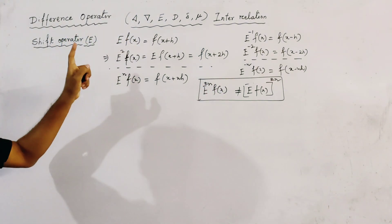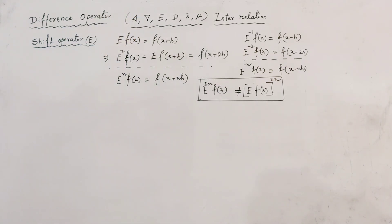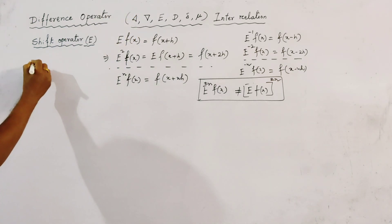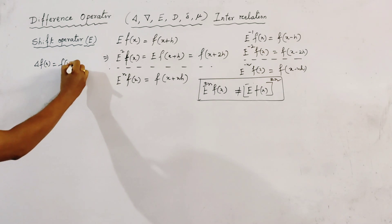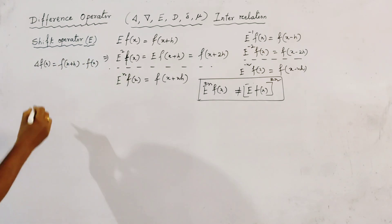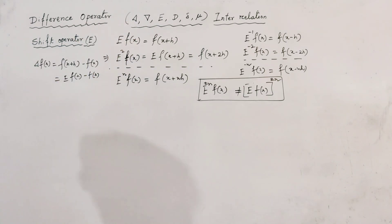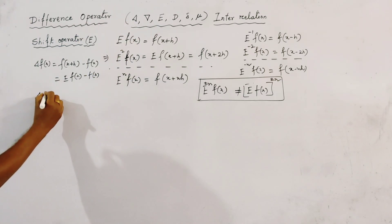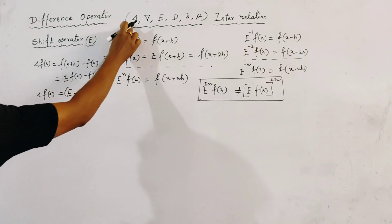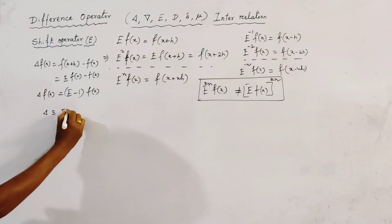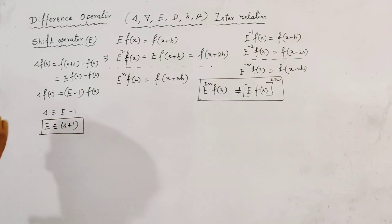Now we find the relation between the shift operator and the forward difference operator. We have delta f(x), already defined in the previous class, equal to f(x + h) - f(x). This is given by E f(x) - f(x), which equals (E - 1) f(x). So the relation between delta and E is: delta is equivalent to E - 1, that is, E is equivalent to delta + 1.